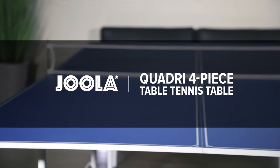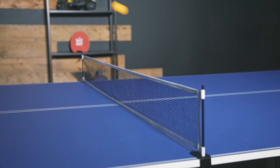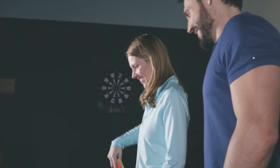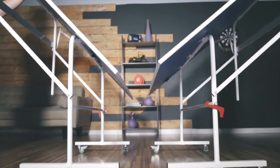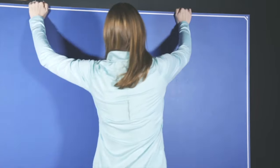Share the excitement of the Yola Quadri four-piece table tennis table with your family and friends. The Yola Quadri four-piece table tennis table is 9 by 5 feet, regulation size, and has a unique four-piece design that makes for compact table storage.